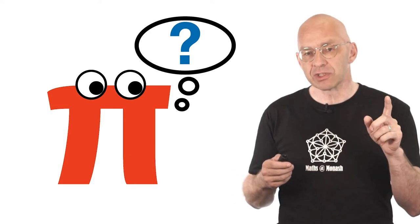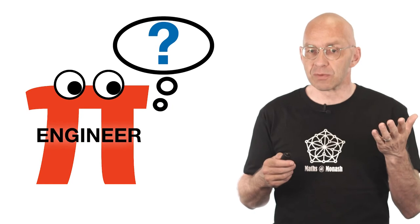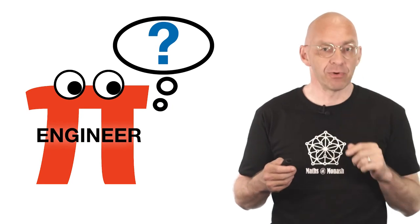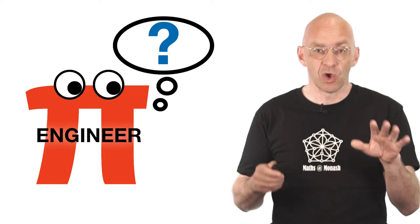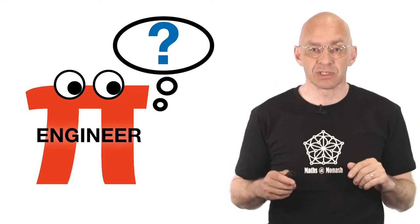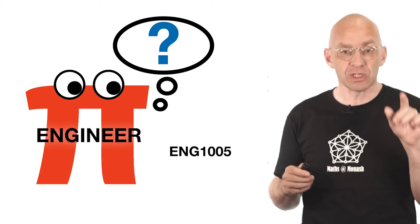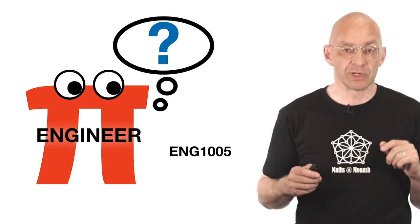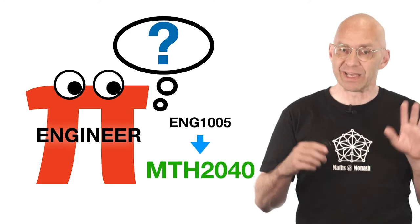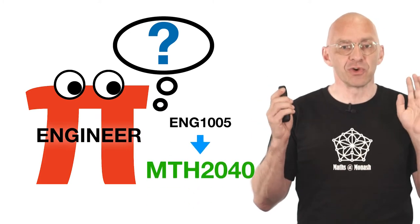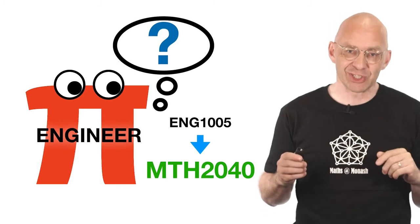if you are an engineering student who also wants to complete a maths major, very important, apart from doing all the engineering maths units, once you've passed the engineering maths unit ENG 1005, as soon as possible enroll in the bridging unit MTH 2040. Okay engineers, that's all you need to know for the moment. You can switch channels now.